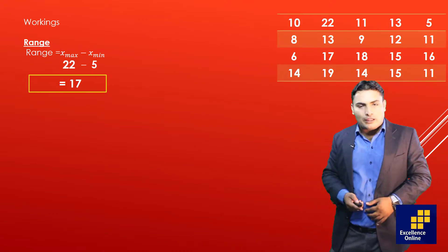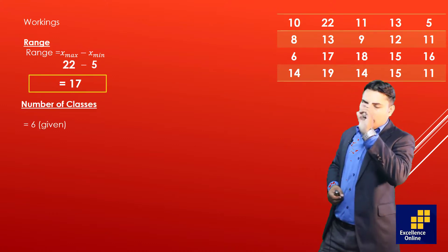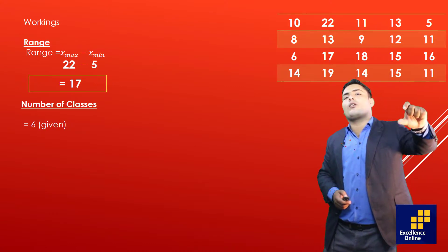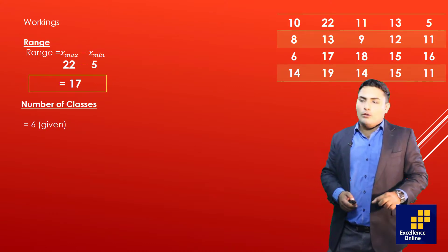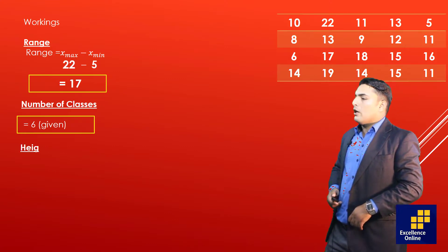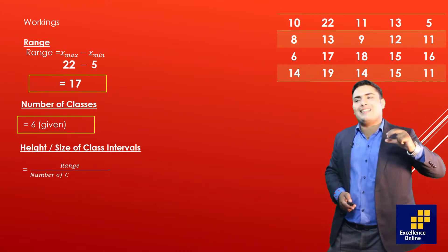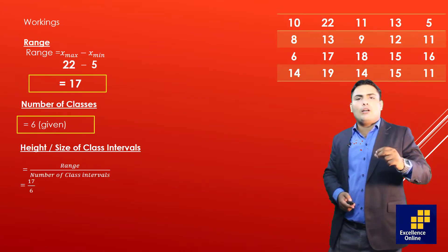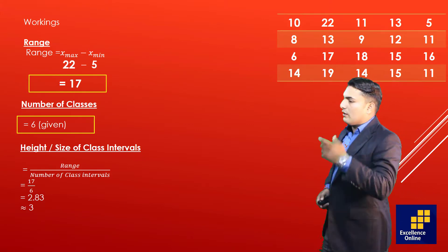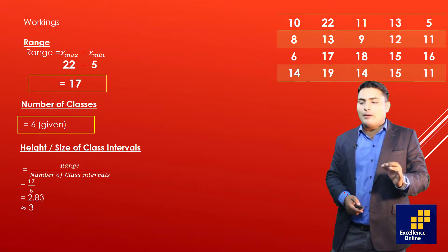The next thing is the number of classes. The question में already 6 number of classes given है, so we don't need to find it. उसके बाद height of class interval — यह होता है कि एक group में कितनी values present होंगी। इसका formula है: range को number of class intervals से divide करते हैं। 17 को 6 से divide किया तो 2.83 आया।